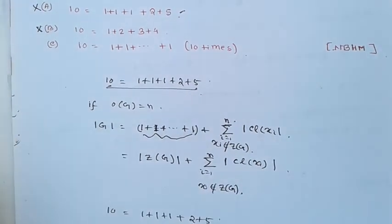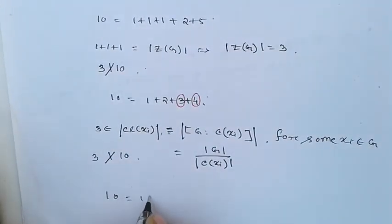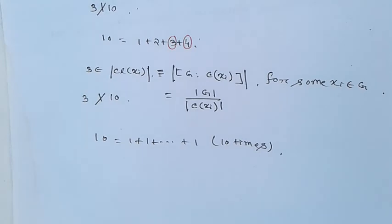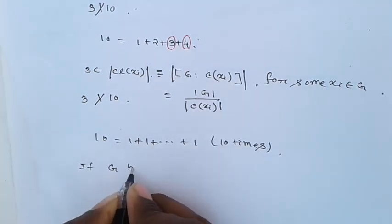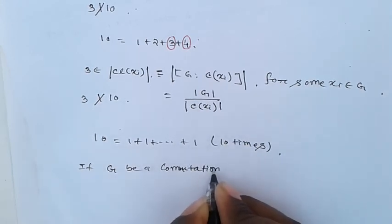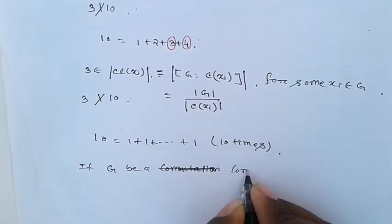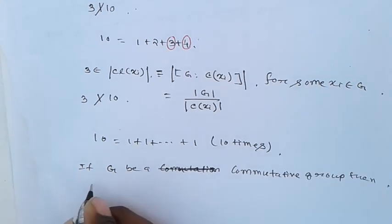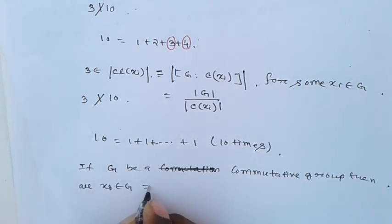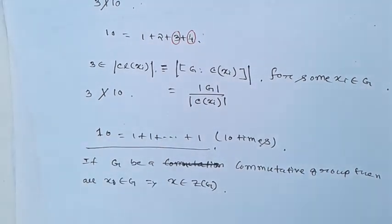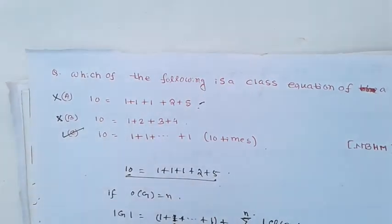Checking the third option: 10 = 1 + 1 + ... + 1 (ten times). If G is a commutative group, then every element x belongs to the center Z(G). For a commutative group, every element forms its own conjugacy class of size 1, so the class equation becomes a sum of ten 1s. Therefore, option C is the correct class equation.